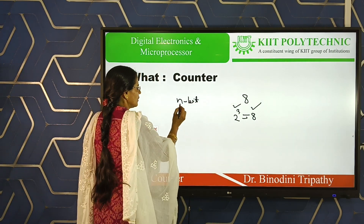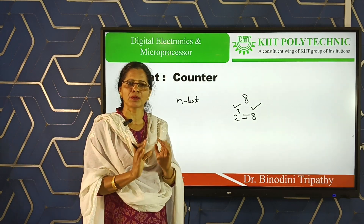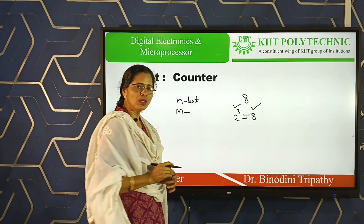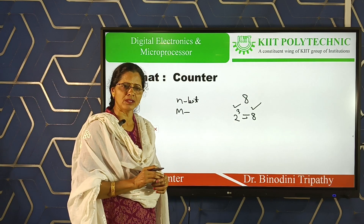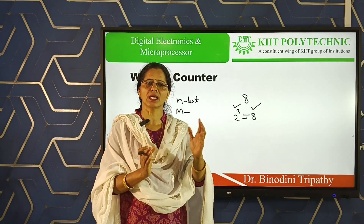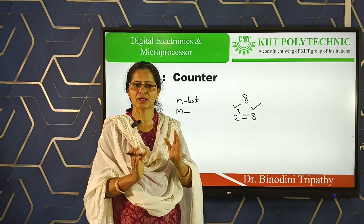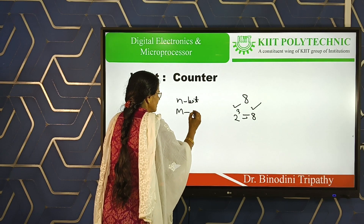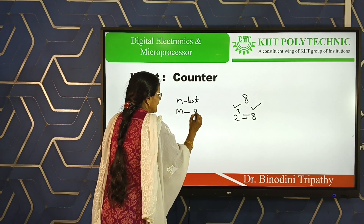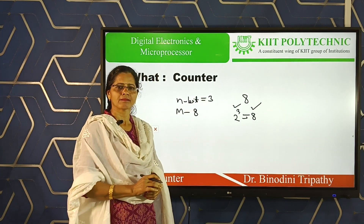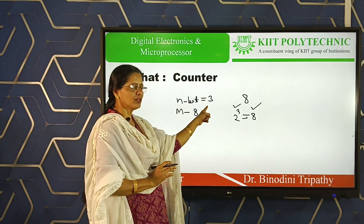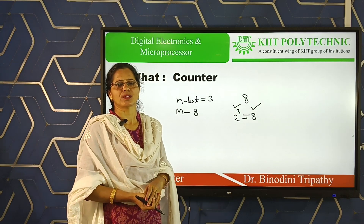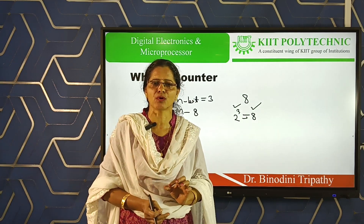To return to the standard definition: n indicates the number of bits in a particular counting sequence, and m indicates the modulus value of the counter. The modulus value means the total number of counting sequences. In this example, m is 8 and n is 3. So we designate this counter as either a 3-bit counter, a mod-8 counter, or a modulus-8 counter.